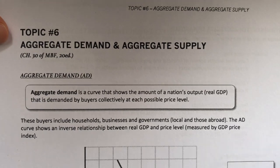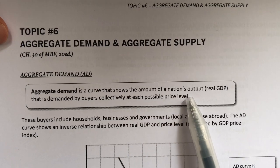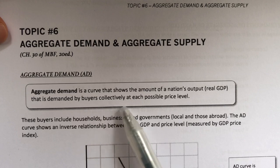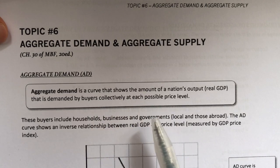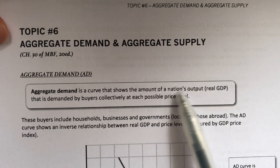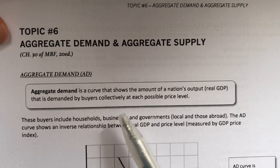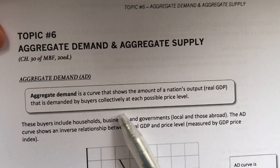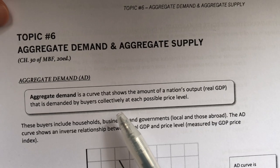So let's look at what is Aggregate Demand first. Aggregate Demand is a curve that shows the amount of a nation's output or real GDP that is demanded by buyers collectively at each possible price level. There are a few keywords here: the amount of a nation's output or real GDP, and demanded by buyers collectively. You need to remember there are four categories of buyers: households, private businesses, the government, as well as external or foreign buyers.